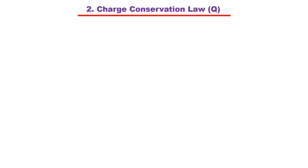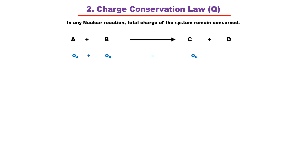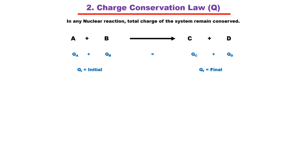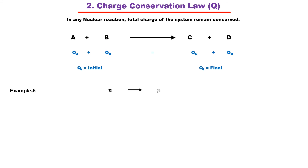The second conservation law is charge conservation. According to this law, total charge must be conserved in any nuclear reaction. Any particle is either positively charged, negatively charged, or neutral. The total charge of the parent particles before the reaction must equal the total charge of the daughter particles after the reaction. For example, if the neutron (neutral) decays into a proton (+1) and a pion (−1), total charge is conserved and the reaction is allowed.